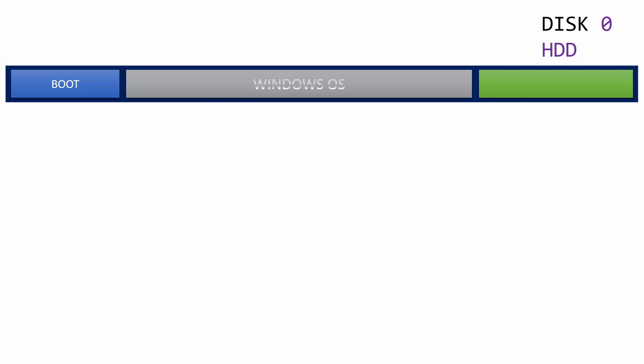For the Windows operating system to work properly, you need three main partitions. The first partition contains boot files responsible for pointing to your installed operating system. The second partition contains the Windows operating system. The third partition contains the Windows recovery environment, which is helpful for troubleshooting and resetting your PC.